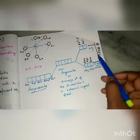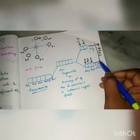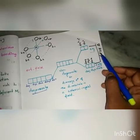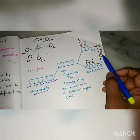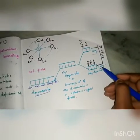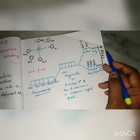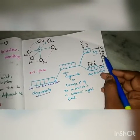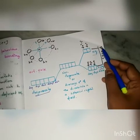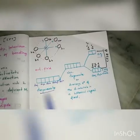The energy difference between the eg orbital and the t2g orbital is called Crystal Field Stabilization Energy, or Crystal Field Splitting Energy. This is represented by delta.